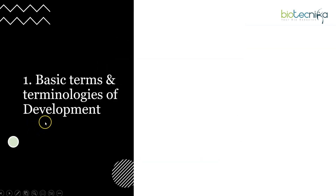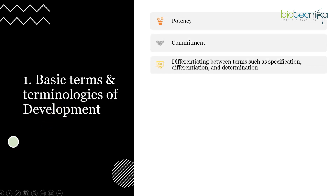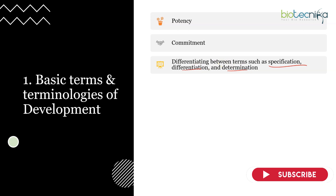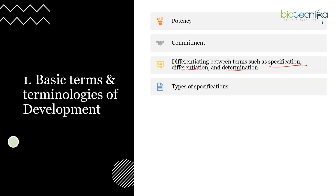The first topic to keep in mind is basic terms and terminologies of development — terms such as potency, commitment, and differentiating terms like specification, determination, and differentiation. Types of specifications: autonomous, conditional, and syncytial specification — which organisms undergo these types and what is the basis of each. You should be able to differentiate between these types and know their other names like regulative development, mosaic, determinate, and indeterminate specification.